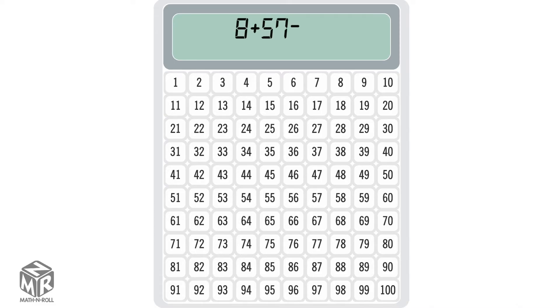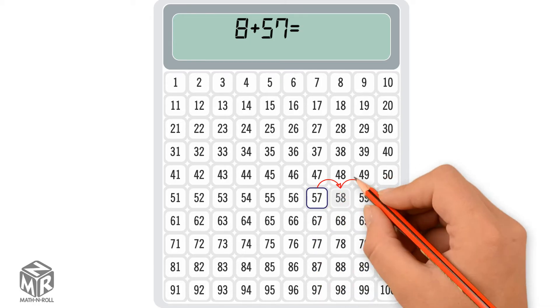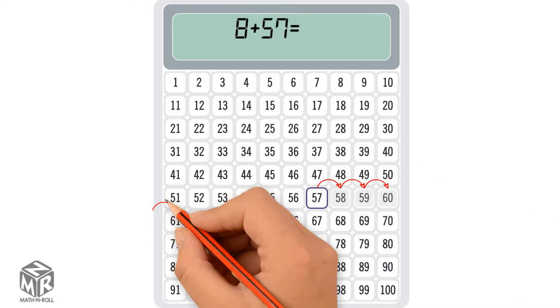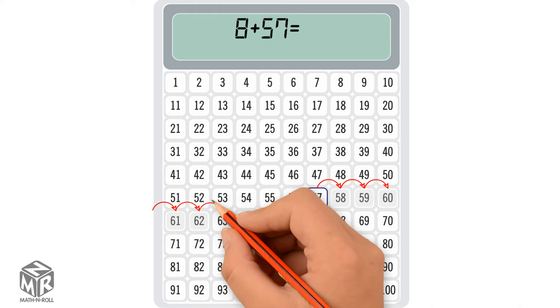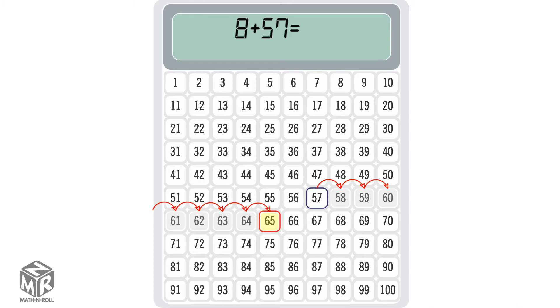8 plus 57. Start with the bigger addend, 57, and count 8 to the next row. We get 65, so 8 plus 57 equals 65.